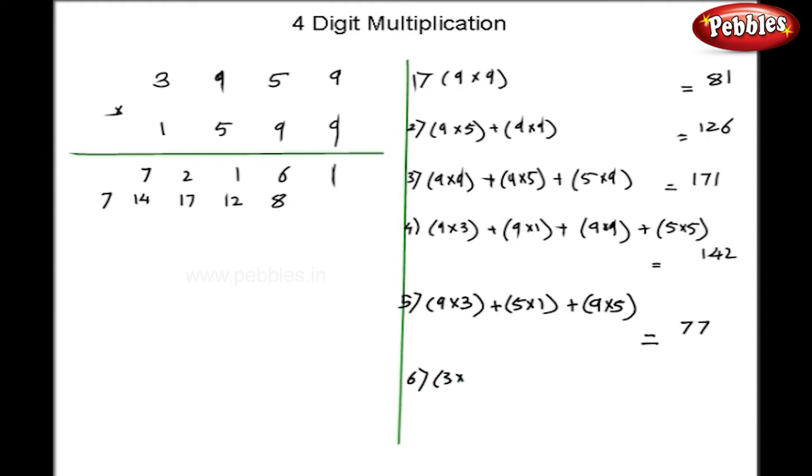As a sixth step, I will do 3 into 5 plus 9 into 1. So, my answer is 24. And, as my last step, I will do the last column that is 3 into 1 is 3.